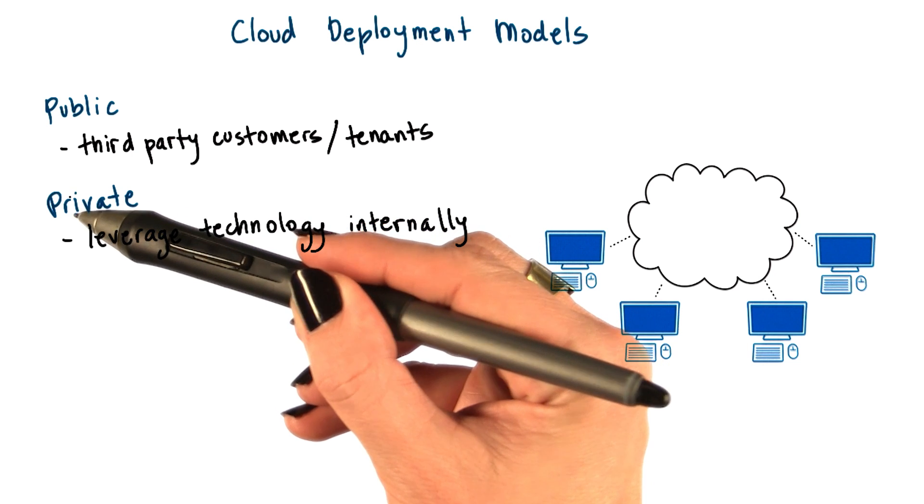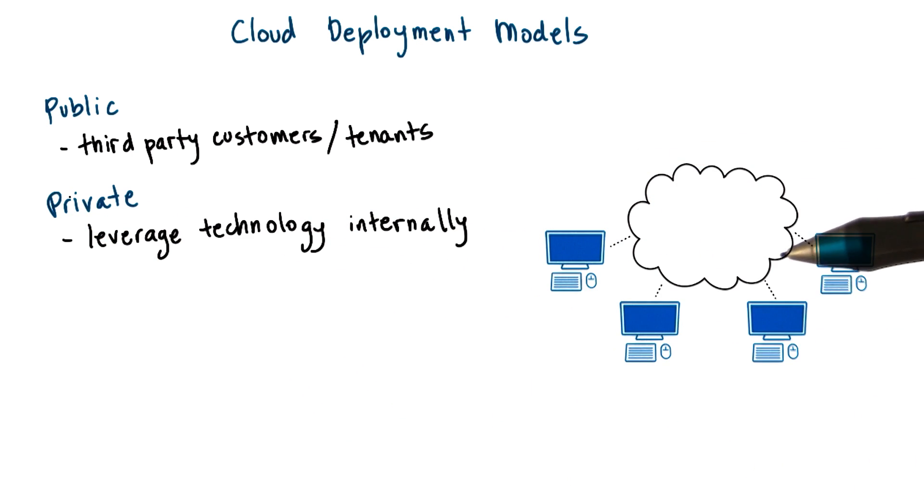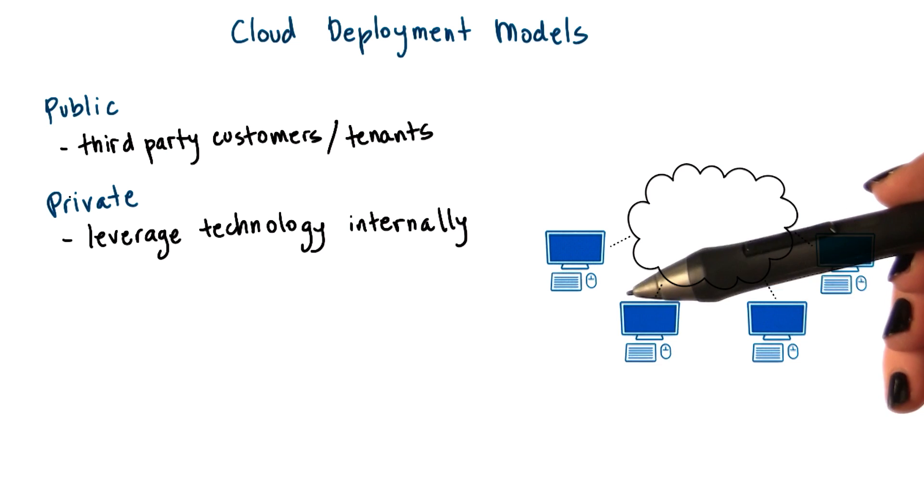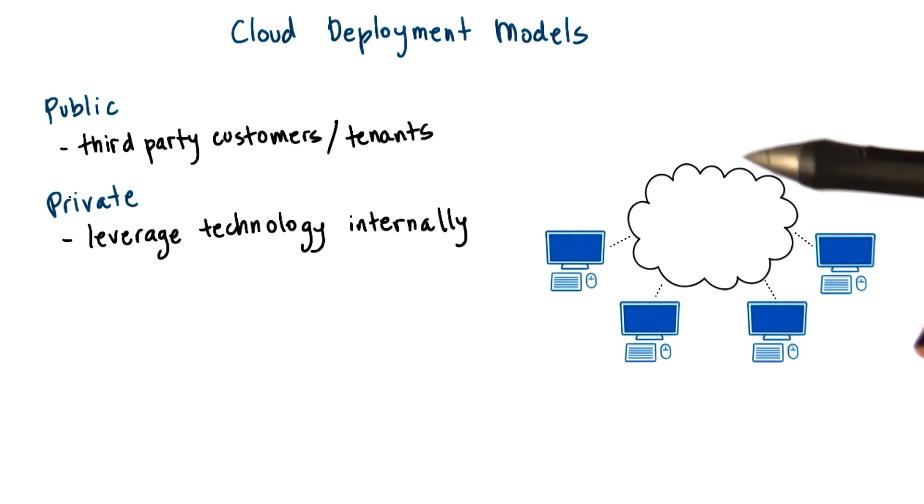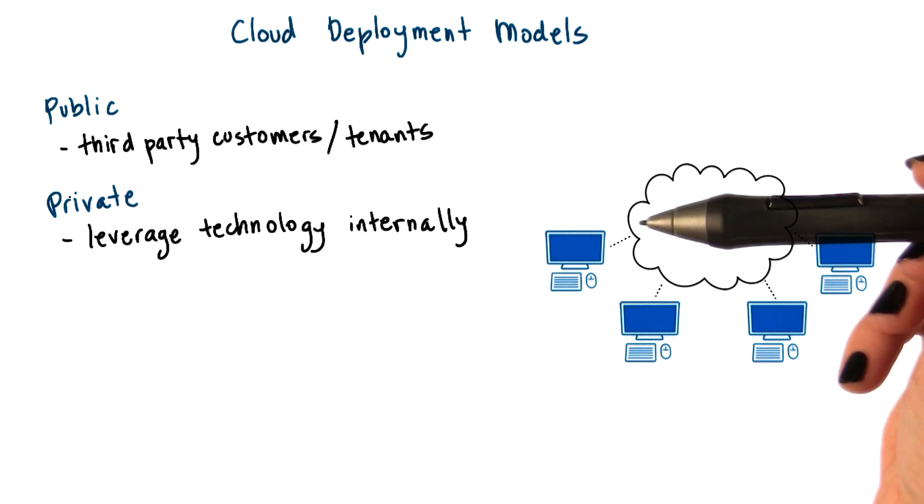In the case of a private cloud, it is the infrastructure as well as the tenants, the services, the applications that run on top of that infrastructure. Everything is owned by the same entity. Cloud computing technology is used to enable some of the provisioning and the elasticity that cloud computing offers to applications.